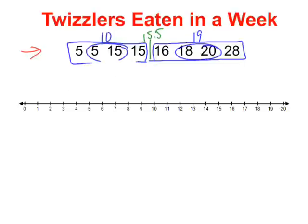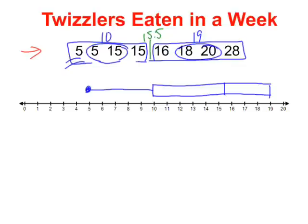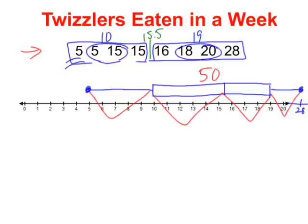Let's begin constructing our box and whisker. The median was 15.5, the first quartile was 10, and the third quartile was 19, so I'm going to go ahead and make my box — that's 50% of your data right there. The minimum value was 5 and the maximum value was 28, so I'm going to extend my number line. So 25% of the students ate this many Twizzlers, 25% this many, 25% this many, and 25% this many. Remember, the box represents the middle 50% of the data.